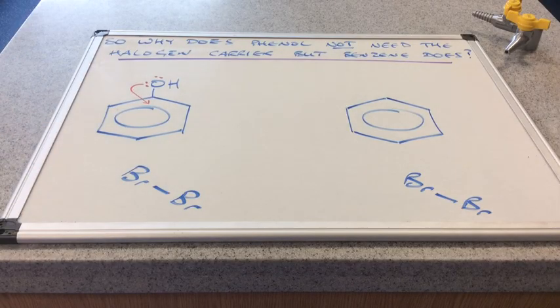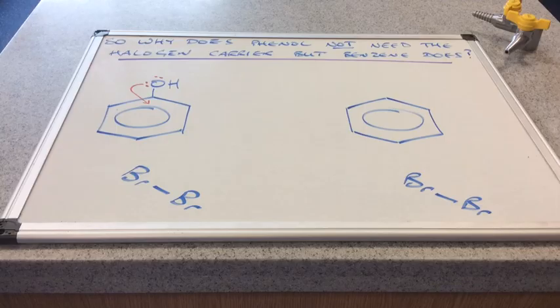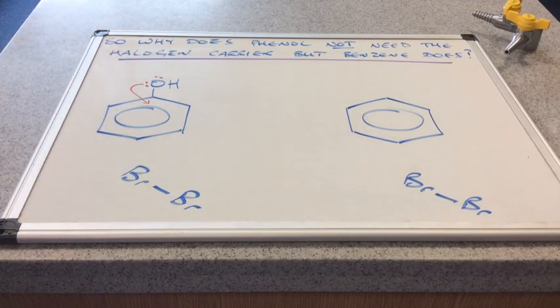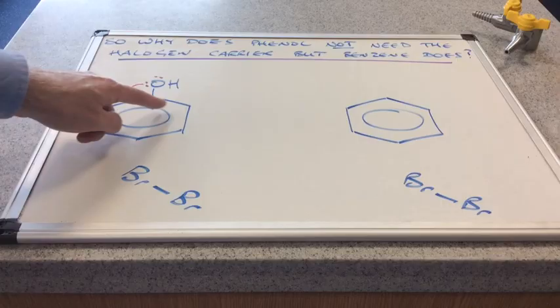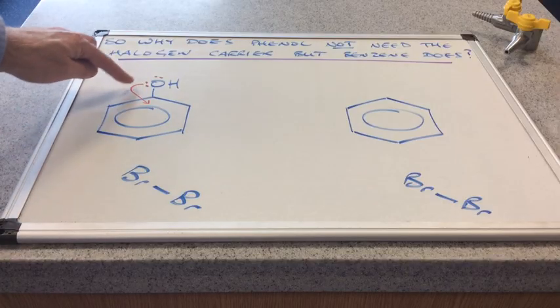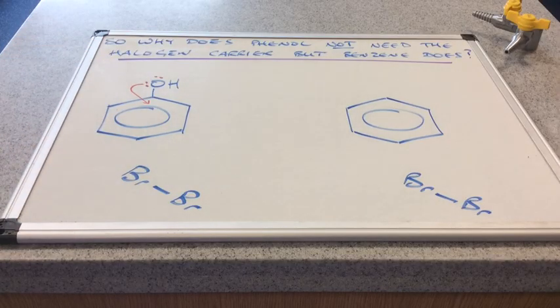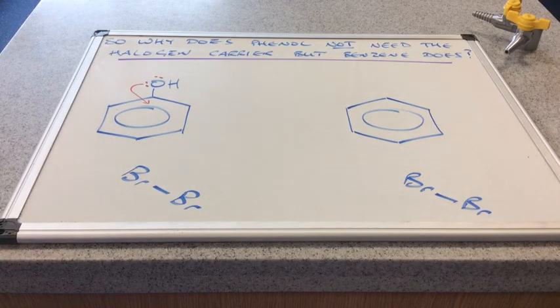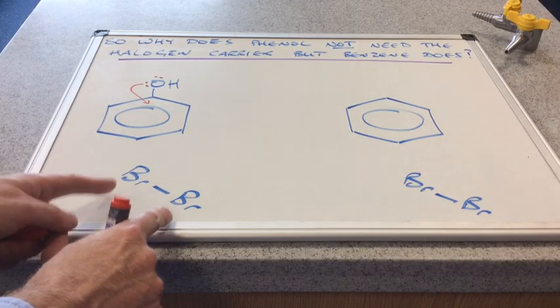And it becomes delocalised and becomes part of this pi electron cloud. And so effectively, you are increasing the electron density of this delocalised electron cloud. So instead of there being six electrons in there, there are now eight. So obviously makes it more electron rich.